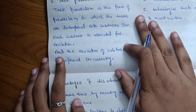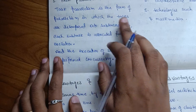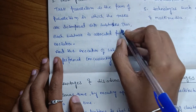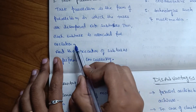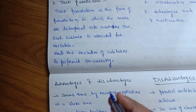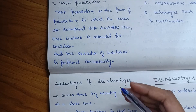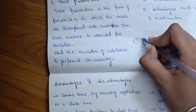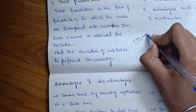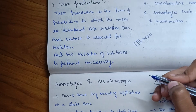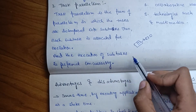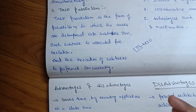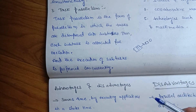Task parallelism is a form of parallelism in which tasks are decomposed into subtasks. Each subtask is allocated for execution, and the execution of subtasks is performed concurrently.